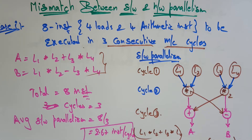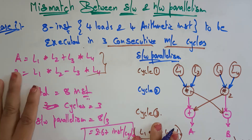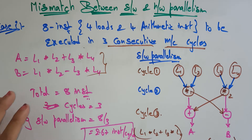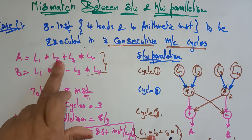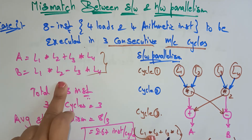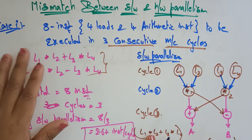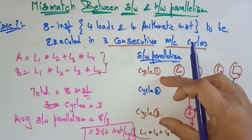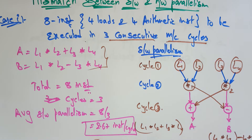Hi students, let's continue with the mismatch between the software and the hardware parallelism. In the previous video, I explained about Case 1. In Case 1, I had taken 8 instructions: L1, L2, L3, L4 — 4 load instructions and 4 arithmetic instructions. These had to be executed in 3 consecutive machine cycles, and the average software parallelism is 2.67.